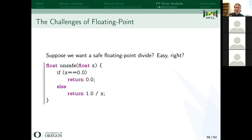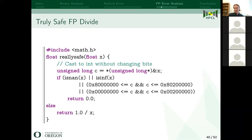Suppose we want floating point division. You might divide by zero in Excel and you don't want 'not a number.' A safe divide should return a finite value for all inputs. Seems easy — just check for zero, return zero, otherwise divide. But that's not the case: floating point is more difficult. You have to check for NaN, infinity, and also for very small subnormal numbers. I figured this out with an exhaustive search — these are all and only the numbers that result in infinity when you divide, represented as bit patterns. It's not straightforward.